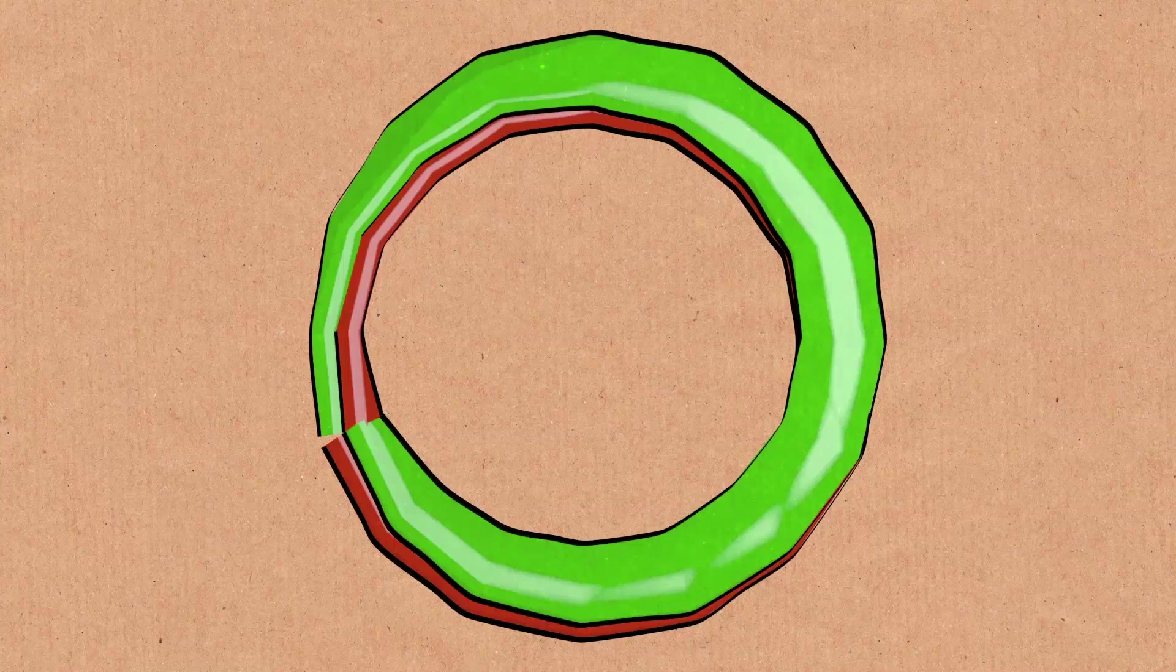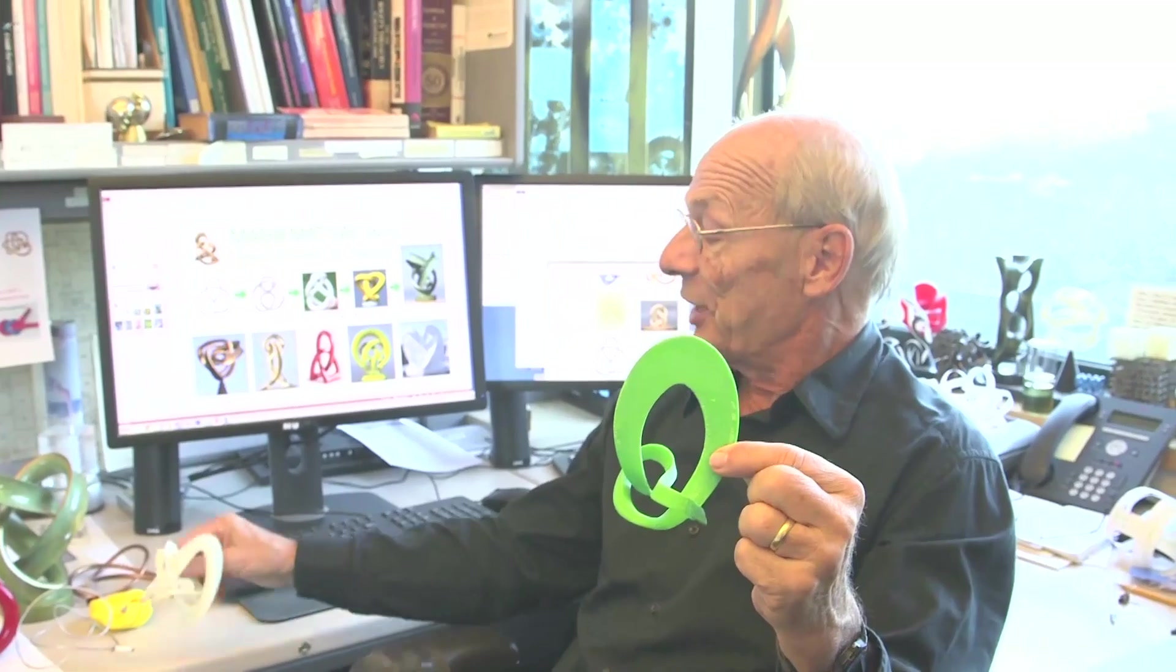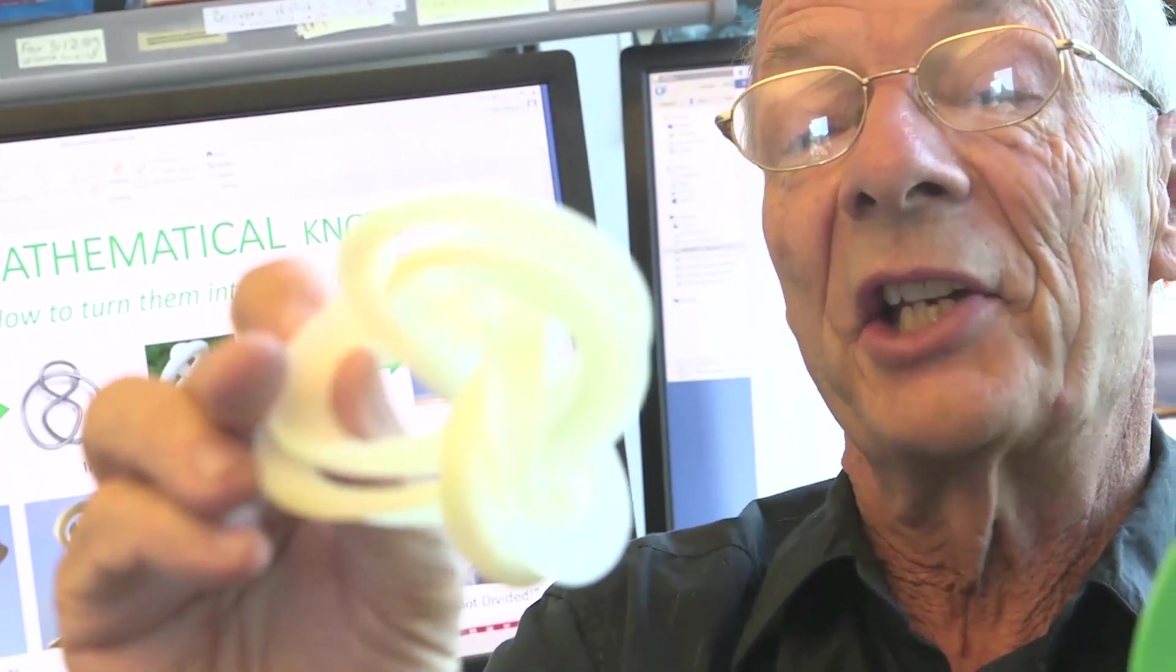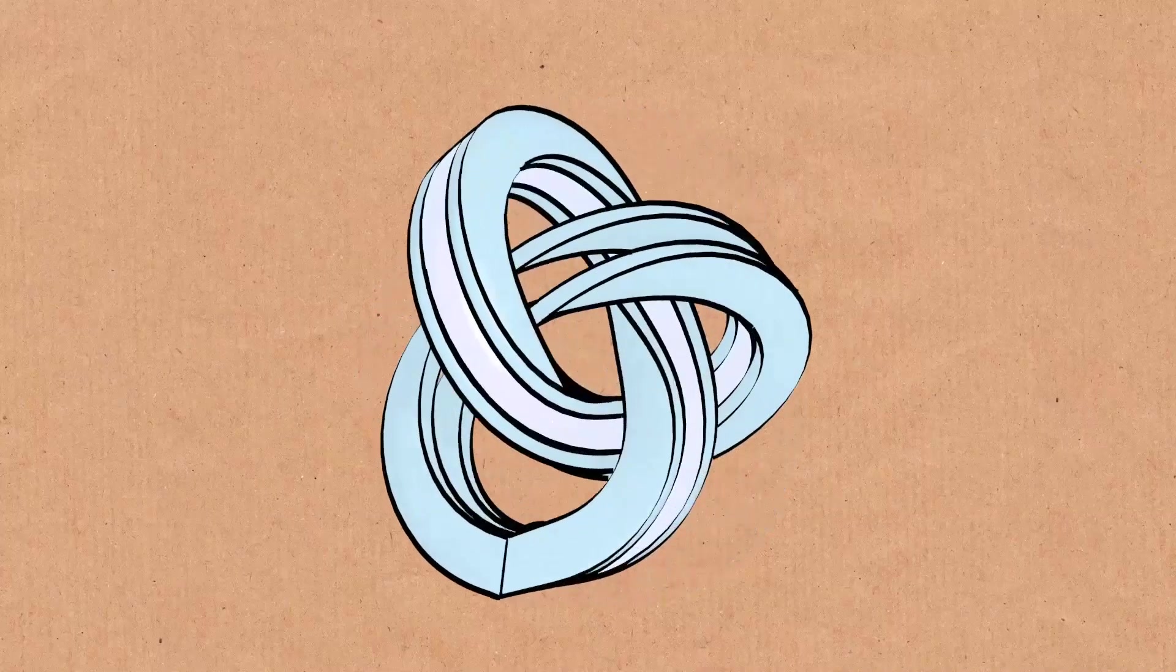This is the idea of a Mobius trefoil knot. And then we took a slightly different shape of, again, you can see this looks roughly like a trefoil knot, except it started out with a cross-section that was more or less rectangular originally. But then we carved out the middle part to make essentially a split.